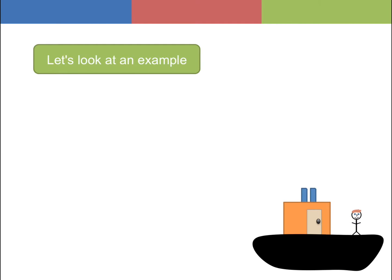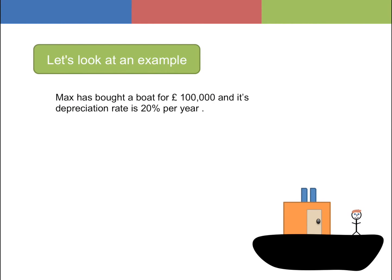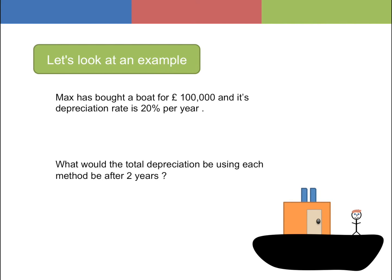Let's have a look at an example using the same scenario. Max has bought a boat for £100,000 and its depreciation rate is 20% per year. What would the total depreciation be after two years using both methods?